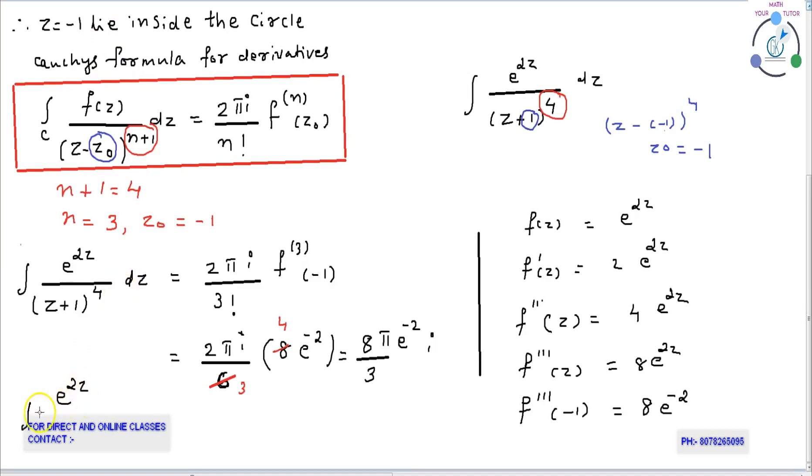Therefore, integral e raised to 2z by (z plus 1) raised to 4 dz equals 8 pi i by 3 e squared.